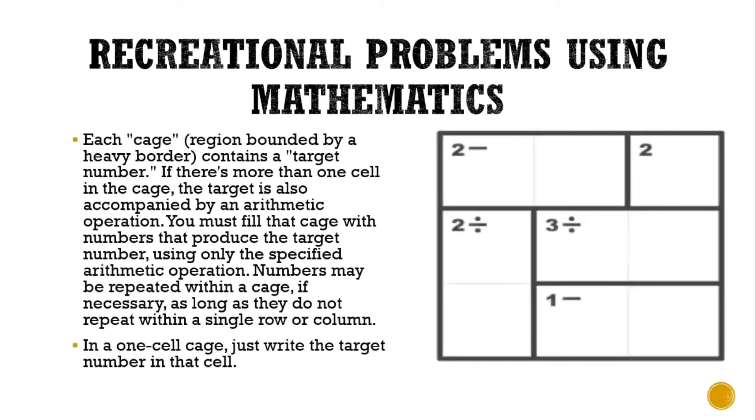Next, each cage, the region bounded by a heavy border, contains a target number. These are our target numbers: 2, 2, 3, 1, and 2. If there's more than one cell in the cage, the target is also accompanied by an arithmetic operation. These are the arithmetic operations: minus, division, division, and minus. You must fill that cage with numbers that produce the target number using only the specified arithmetic operation.